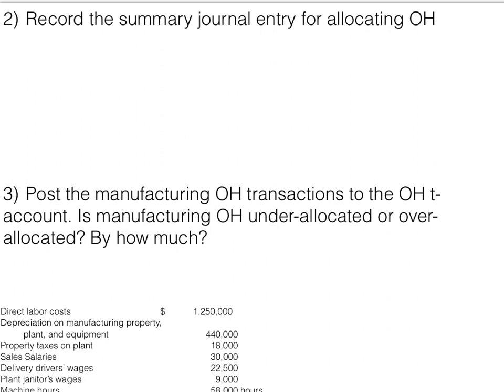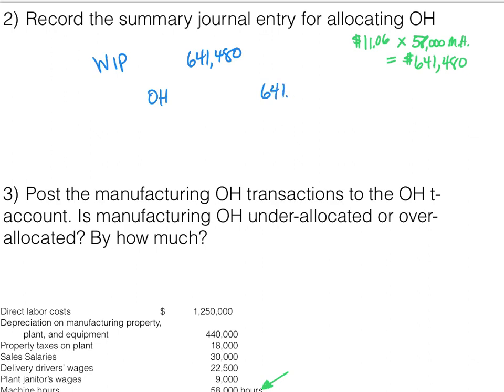The next step is to record the journal entry for allocating overhead. When we apply overhead into process, we debit work in process and credit overhead. Our rate is $11.06 per machine hour. The actual machine hours were 58,000, which gives us an applied overhead of $641,480. So the journal entry is: debit work in process $641,480, credit manufacturing overhead $641,480.